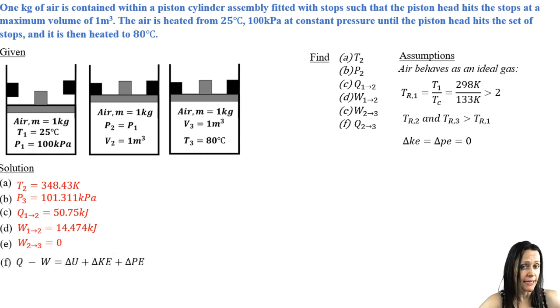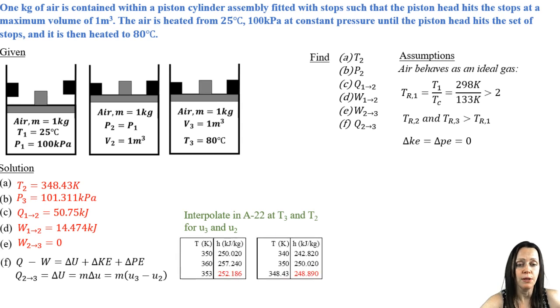And then for part F, I need to find the heat transfer from two to three. I don't have any work. I don't have any kinetic and potential energy changes. They're assumed to be zero. And so now I've got my delta big U equals M delta little u. And all I need to do is look up the U3 and the U2 values at T2 and T3. Once again, it does require a little bit of interpolation. Oh, and those should be U values, not H. It should say U, not H.